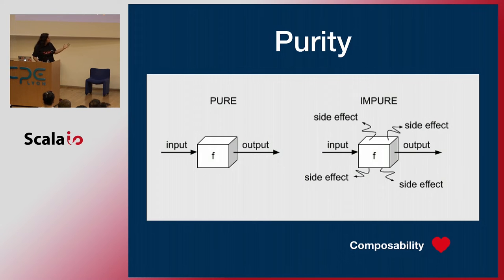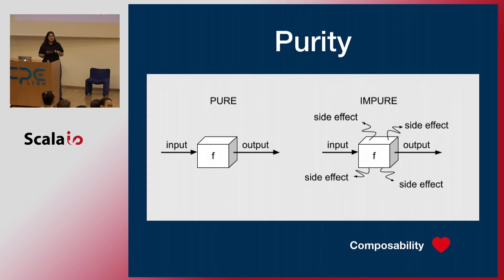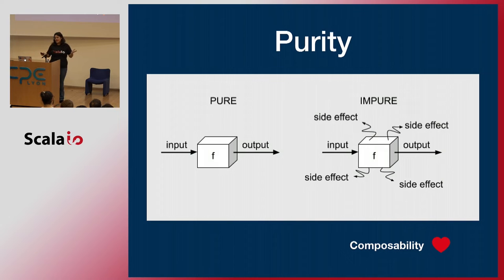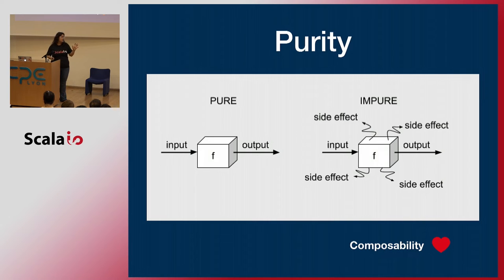What purity tells you is that the signature of the function is a full description of what it does — no lies there. If you are working with an impure function, to fully understand what it does you need to look at the implementation, which means reading a lot of code. And there are a lot of other benefits we're not going to talk about, such as composability — if the function is fully represented by its signature, then I can do cool stuff like composing things together.